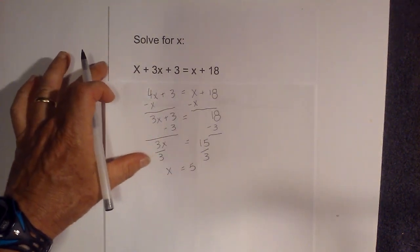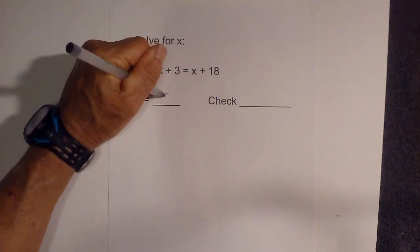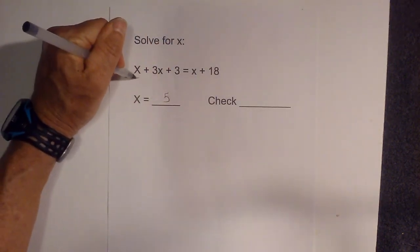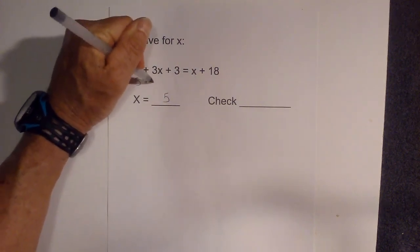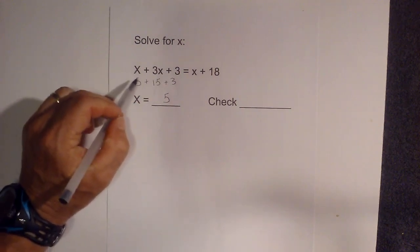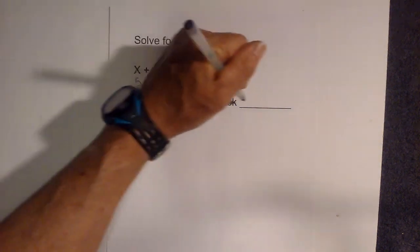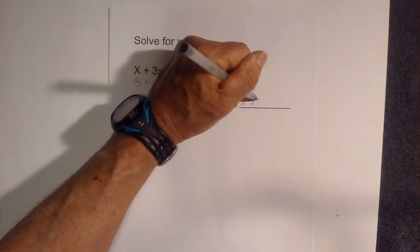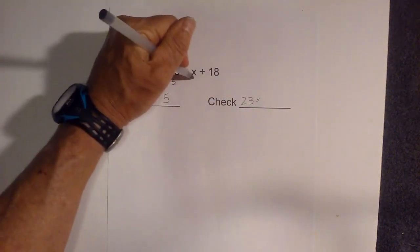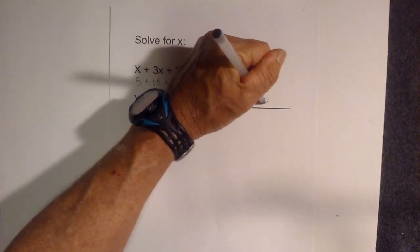Now just like before we're going to check our work. So x is 5. Now we have 5 plus 3 times 5 is 15 plus 3, so that's 20, 23. And then we have 5 plus 18, and that is 23. So it checks out.